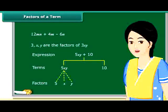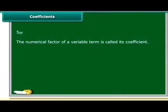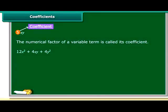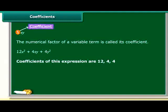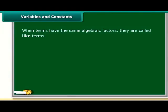Remember, the factors cannot be further factorized. The numerical factor of a variable term is called its coefficient. In the term 5xy, 5 is the coefficient of the whole term. Let us take this expression: 12x² plus 4xy plus 4y². It has 3 terms.